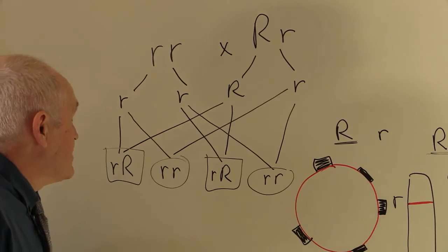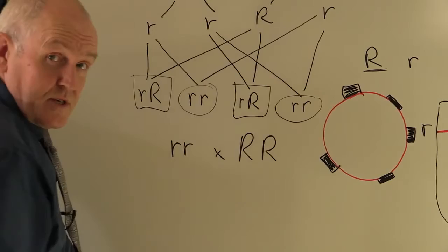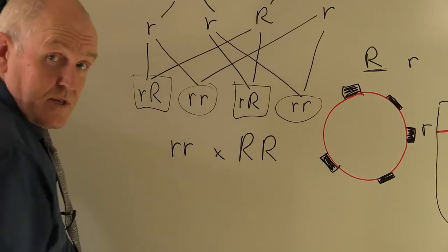Now, alternatively, we know the mother is going to be Rhesus negative. The father could be homozygous for the trait, with two Rhesus positive genes. Phenotypically, the father is still, of course, Rhesus positive. In this case, the mother produces ova, the father produces sperm.